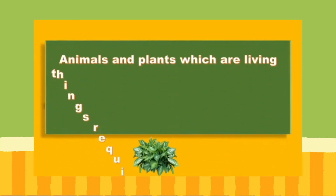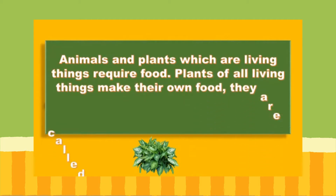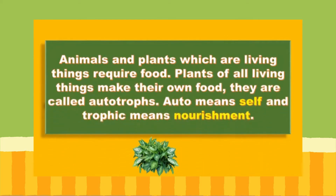Animals and plants, which are living things, require food. All living things require food. Plants, of all living things, make their own food. Therefore, they are called autotrophs. The reason they are called autotrophs is because they are able to make their own food. Auto in the word autotrophs means self, and trophic means nourishment. Together you get the word autotrophs, showing that plants are able to make their own food.